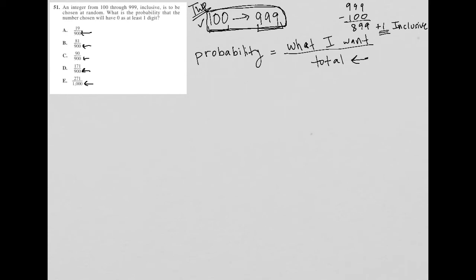Right? So we're not just finding the space in between 100 and 999, but we actually include that 100 number, right? So 900. So I know that my total from my probability, my denominator is 900.